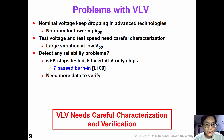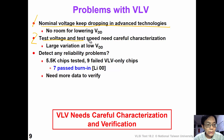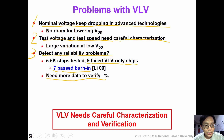VOV testing looks good; however, it still has some problems. Number one: nominal voltage keeps dropping in advanced technologies, so there is not much room for lowering the VDD. Second, as mentioned earlier, test voltage and test speed need to be characterized very carefully. Third, does VOV detect any reliability defects? Based on the Murphy experiment, out of the nine VOV-only chips, seven of them passed burn-in and the other two failed burn-in. So we would need more data to verify whether VOV is effective at screening reliability defects.